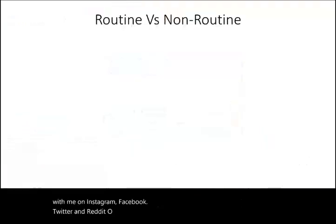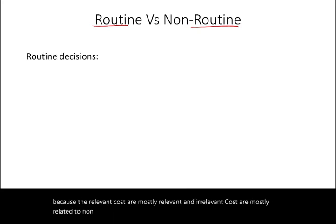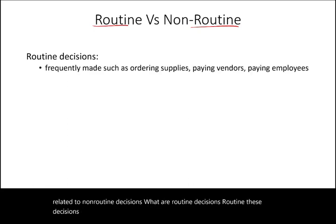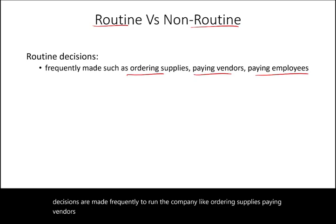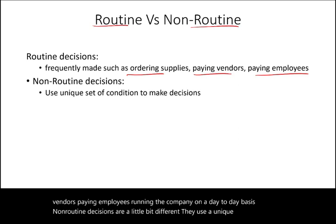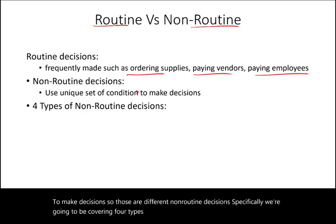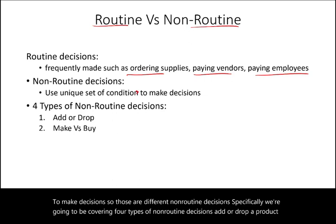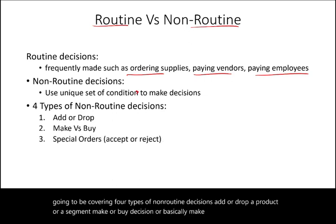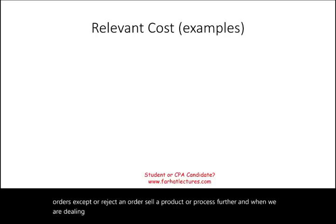Relevant and irrelevant costs are mostly related to non-routine decisions. Routine decisions are made frequently to run the company — like ordering supplies, paying vendors, paying employees, running the company on a day-to-day basis. Non-routine decisions use a unique set of conditions. We'll cover four types: add or drop a product or segment; make or buy (make or outsource); special orders — accept or reject; and sell a product or process it further.